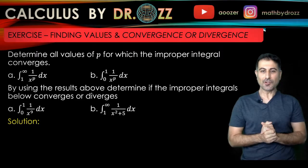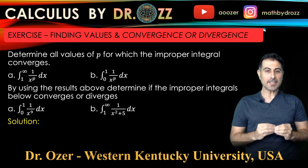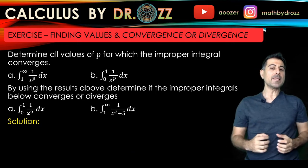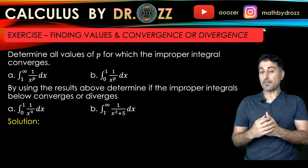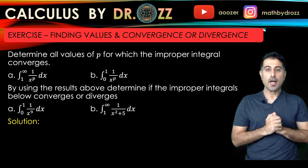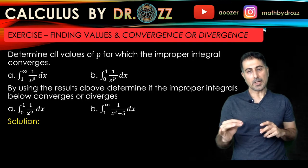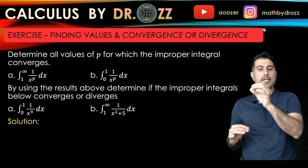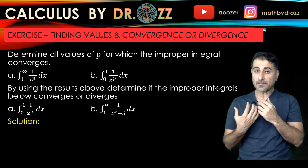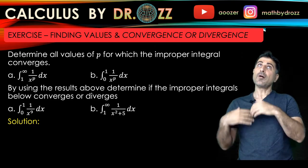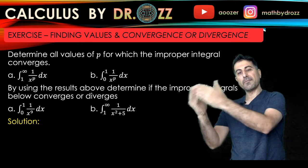Hello, welcome back. This is Calculus by Dr. Oz. Today we're going to go over an exercise. We're going to determine the value of the given integral — most probably an improper integral. We're going to determine a parameter that appears in the integrand to make the integral convergent or divergent. We're going to find a set of values for p for which the given integral is convergent.